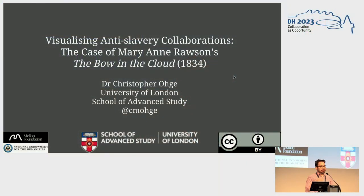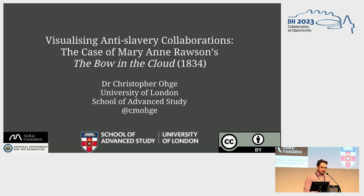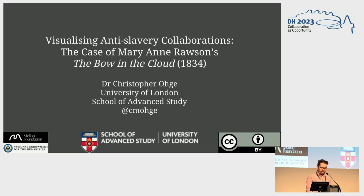Hello, everyone. As Serenity mentioned, I'm working on a digital archive and a digital edition of a little-known British anti-slavery anthology called The Bow in the Cloud, which was edited by Marianne Rawson. This is being supported by an NEH Mellon fellowship in digital publication. I'm primarily trying to build this digital edition out, and in the process, it has raised some interesting issues about data visualization — that's what I'm going to talk about today.